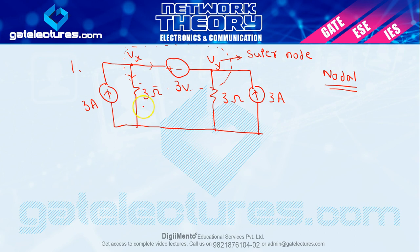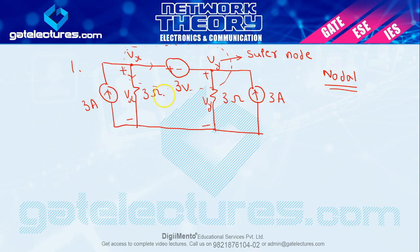Super node analysis में यहाँ पर Vx और Vy के बीच एक voltage source है, और यह तीनों combination मिलाकर super node बन रहे हैं। आपको सिर्फ Vx, Vy और इस 3V के voltage source को consider करना है। अगर मैं clockwise move करते हुए KVL equation लगाऊं, तो: minus Vx plus 3 plus Vy equal to 0 — यह equation number 1।